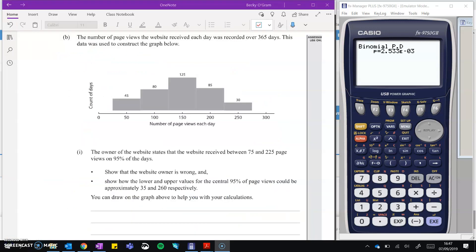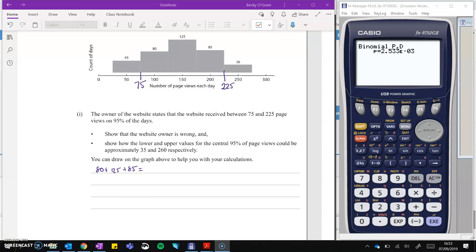Okay, just pause the video to have a read through this question. So we've got 365 days in total. These numbers here add up to 365. Number of page views that happen on each of those days. We've got a count here. So we want to know how many days were between 75 and 225. So that comes to 290, 290 out of 365. Comes to 79.45%. So not 95% of the days. Then we want to figure out where the central 95% could be.